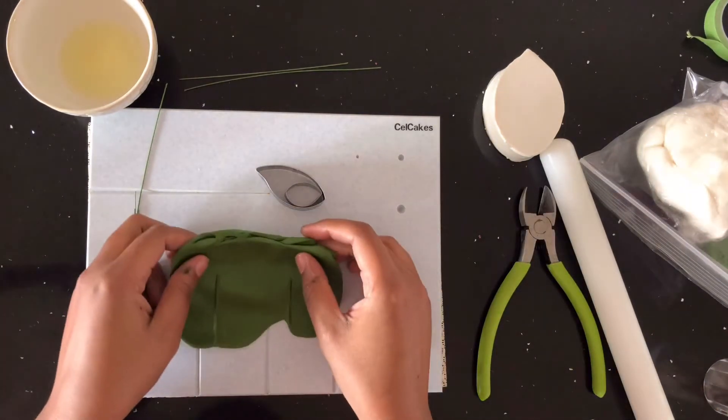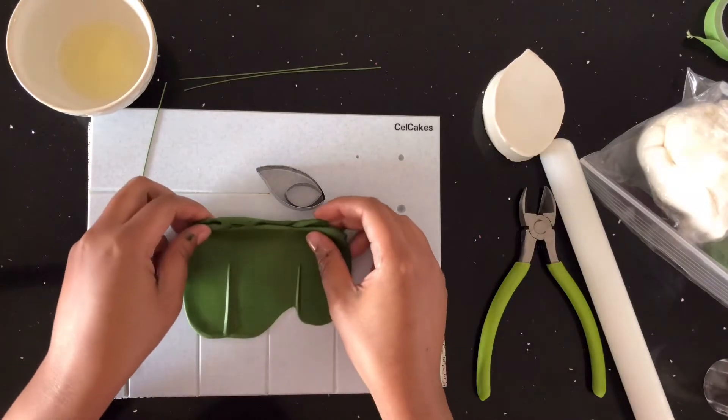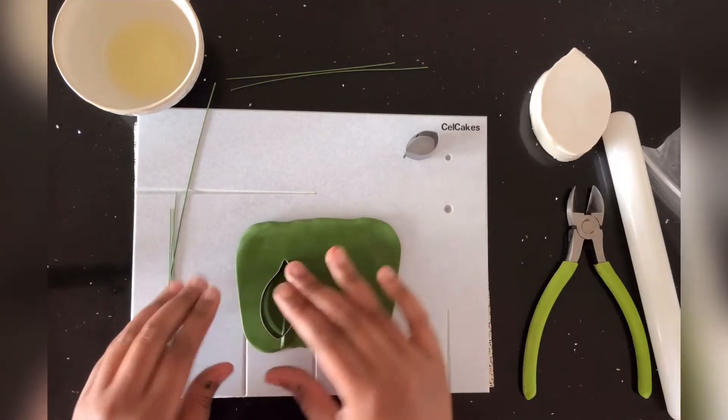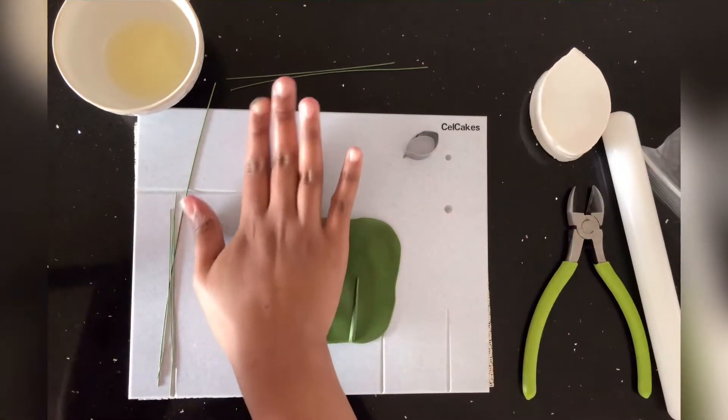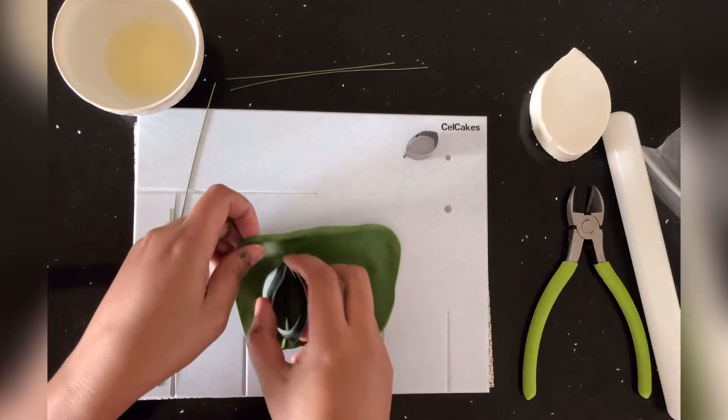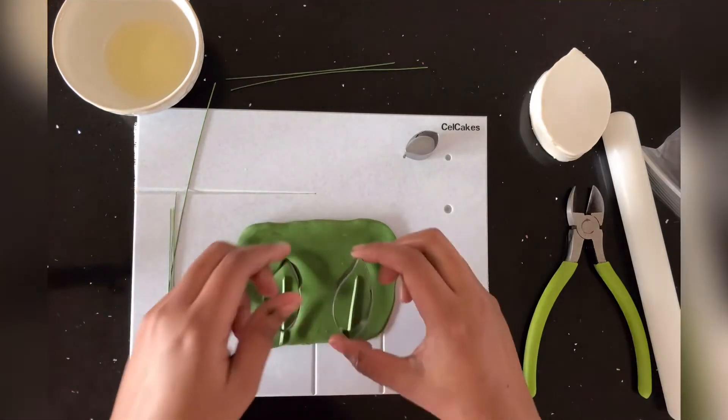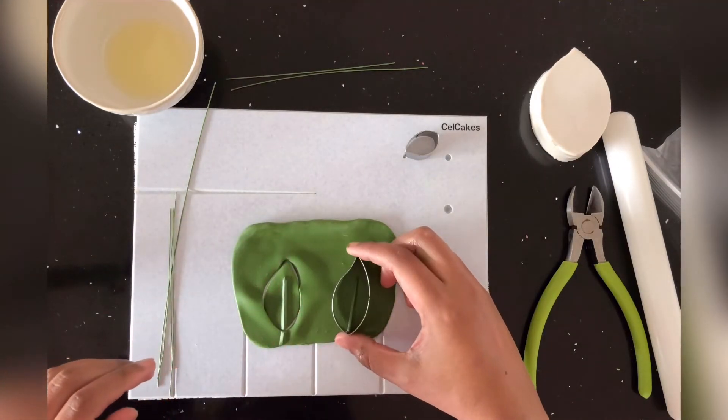Take your gum paste off and flip it over and you're going to see these lines. The lines are going to be raised and then you're going to want to take your cutter and press firmly so that you get a clean cut when you use your cutters.